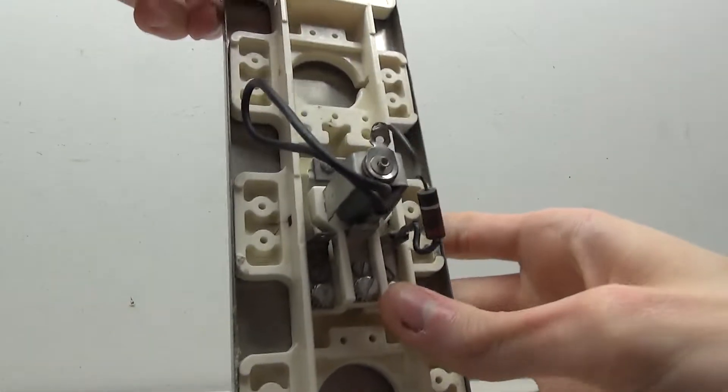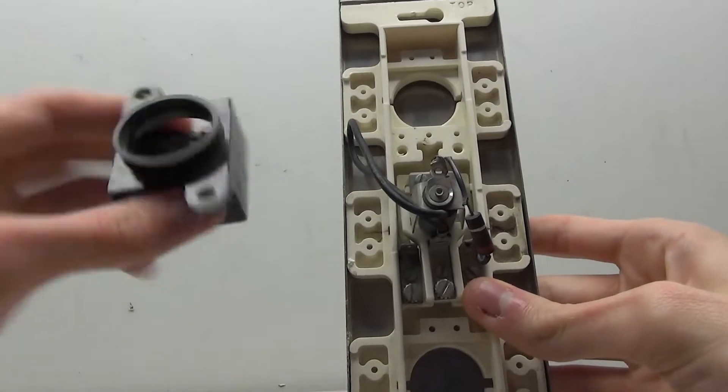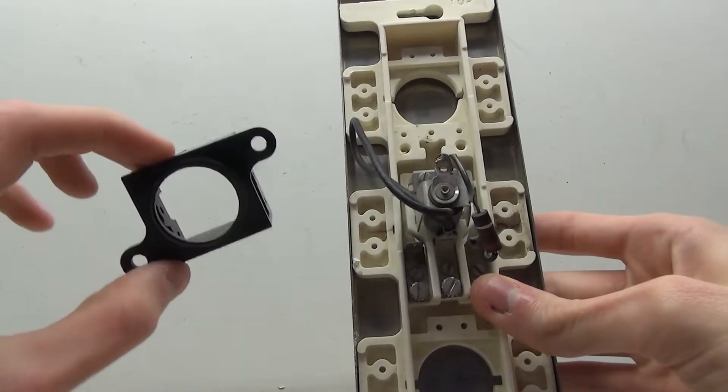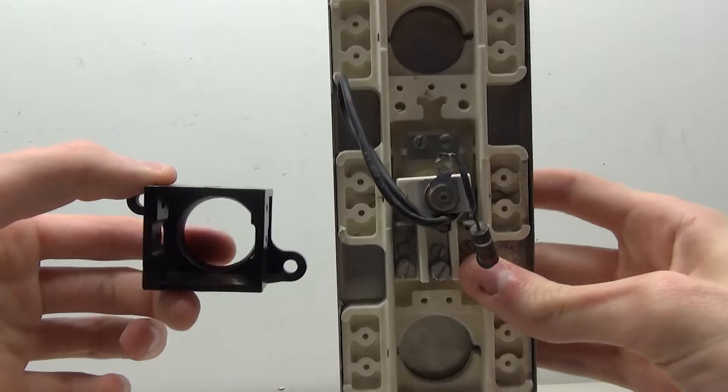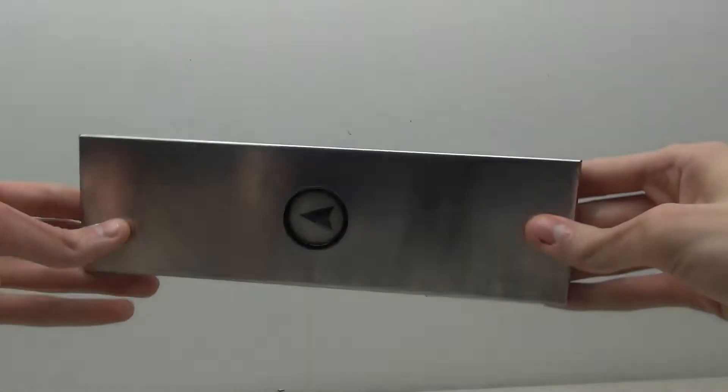If you look on the back here, we have this kind of contact arrangement and it differs from the type E, which would look more kind of like this. This is just a shell, but you can see the difference on how it's mounted.